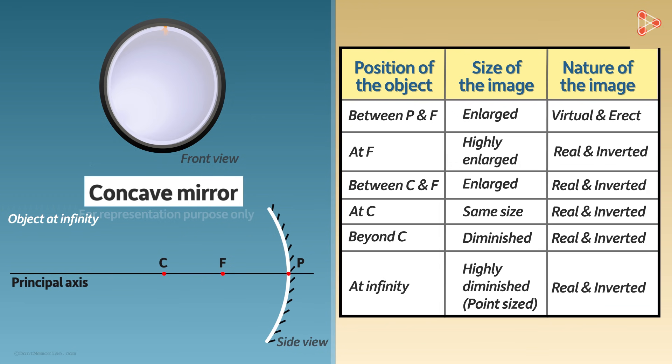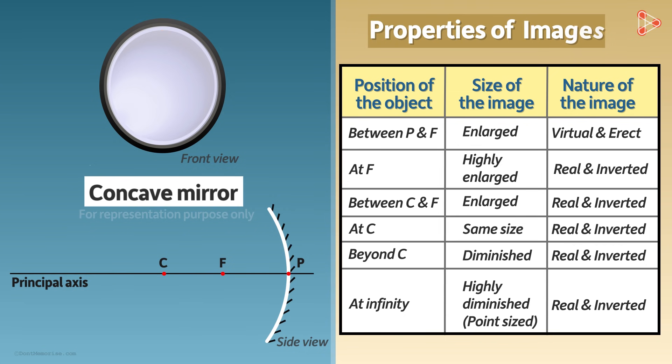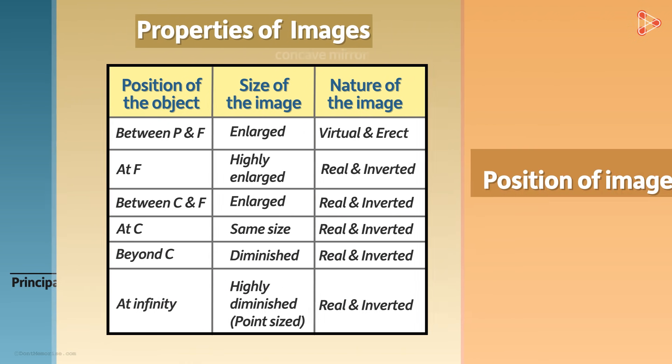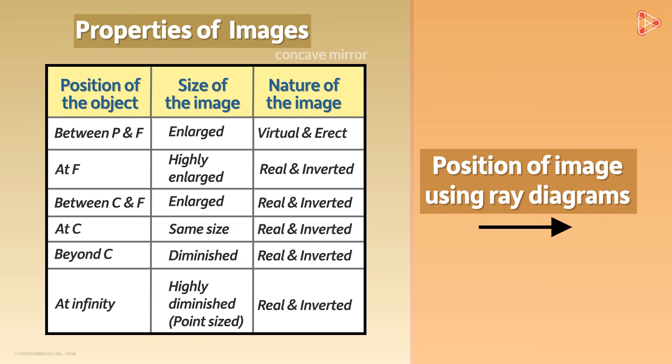Take a moment and go through the properties of images again. From this table, you can see that the image is virtual only when the object is kept between the focal point and the pole. Otherwise, the image formed is always a real image. In the next video, we will find out the position of these images using ray diagrams.